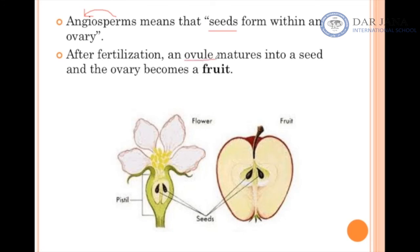After fertilization, the ovule itself is going to become the seed, and the ovary is going to become the fruit. So the ovule becomes the seed and the ovary becomes the fruit. Inside the seed is the embryo of the baby plant.